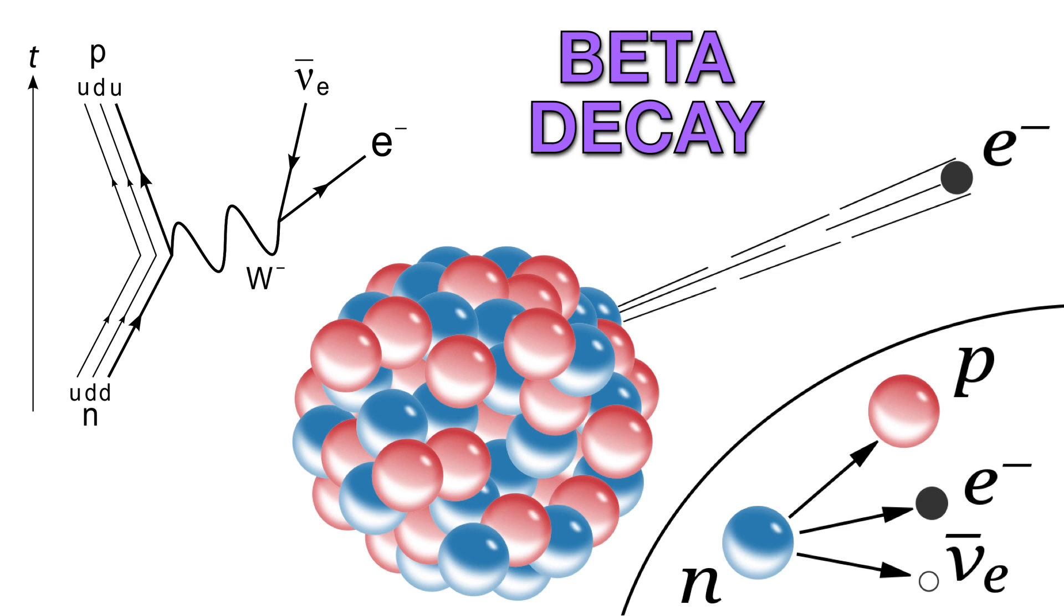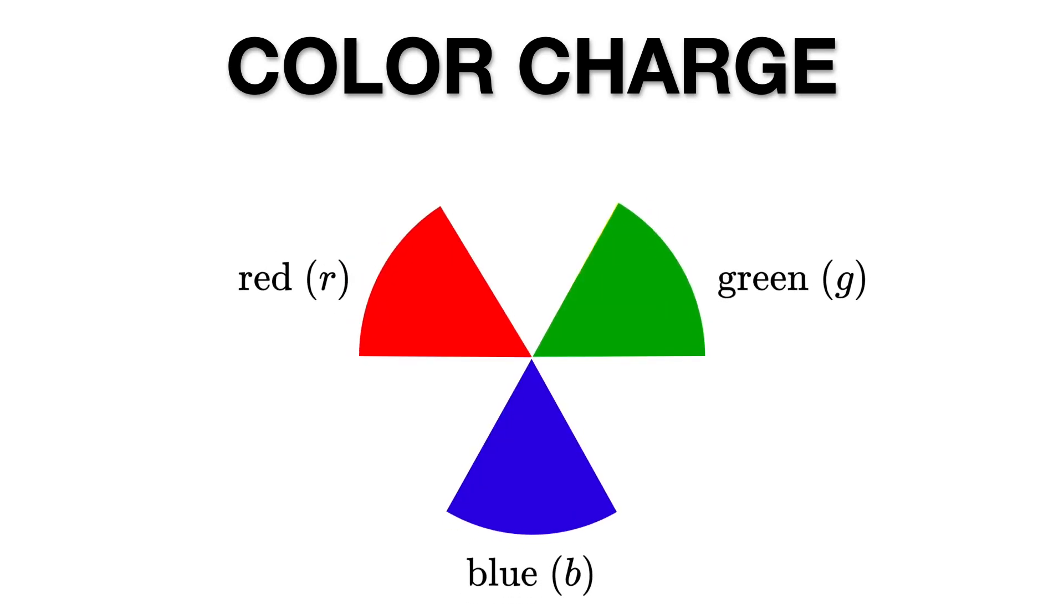Every particle which feels the electromagnetic force carries an electric charge, either positive or negative. The strong and weak forces also have charges associated with them. For example, the color charge. Only quarks and gluons experience the strong force.